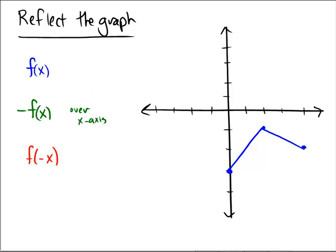And then in red, on the exact same picture, I will draw the one that has the x being negative, and that's going to be a reflection over the y axis.